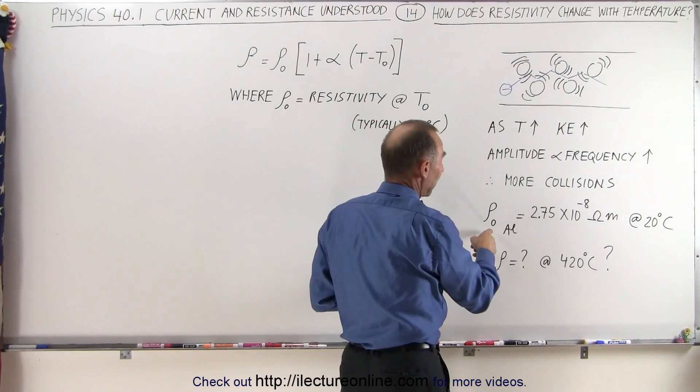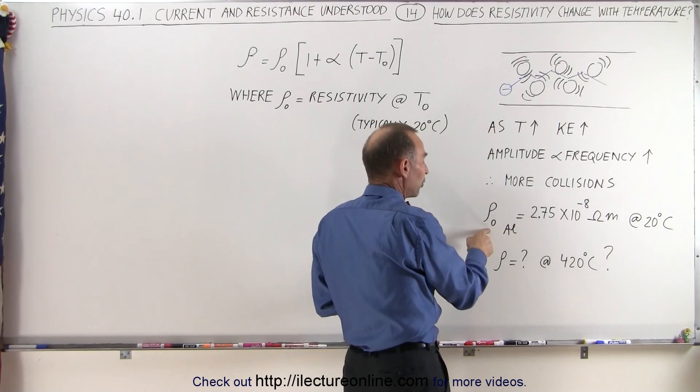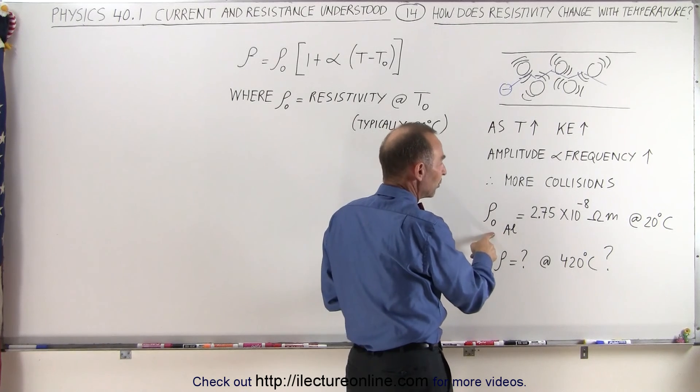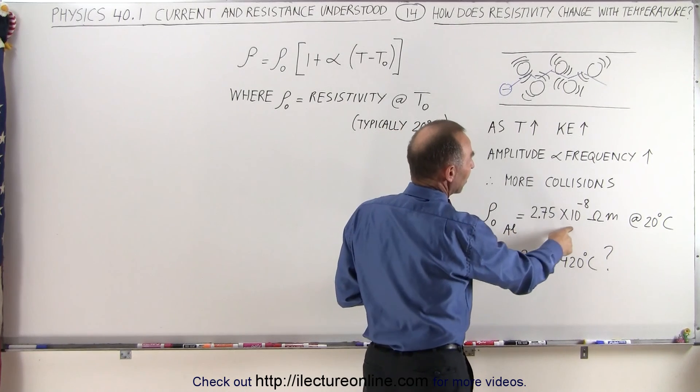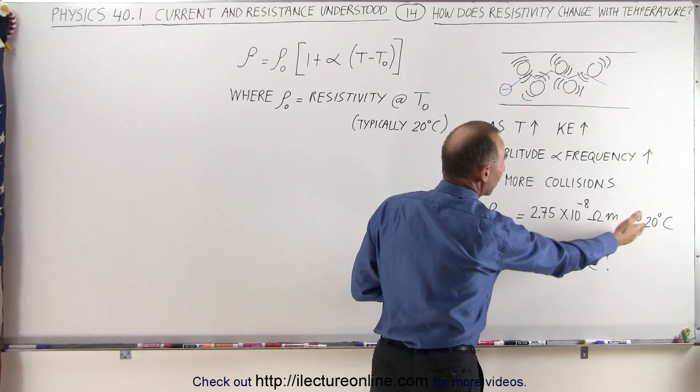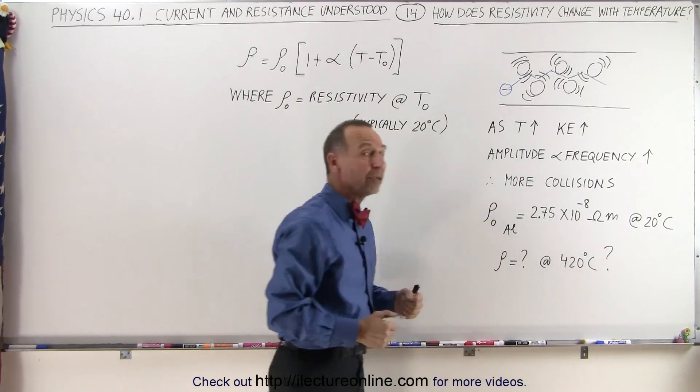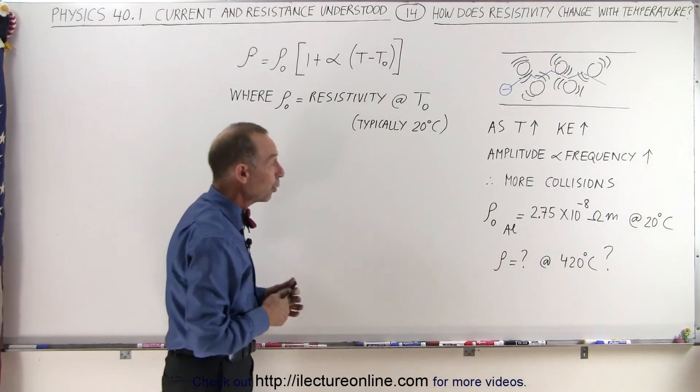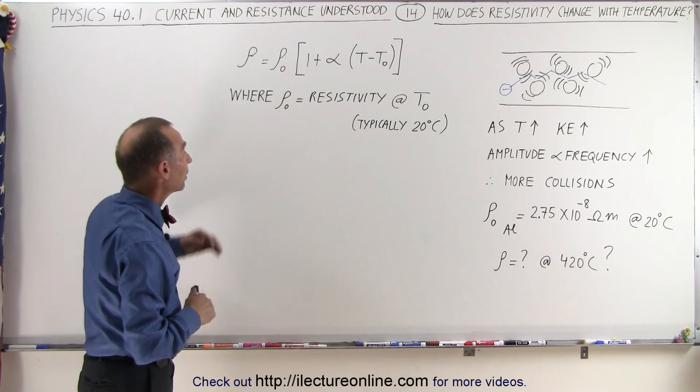And you can see then that if you have a starting point for the resistivity of aluminum to be 2.75 times 10 to the minus 8 ohm meters at 20 degrees centigrade, what would be the resistivity at a higher temperature, like 420 degrees centigrade?